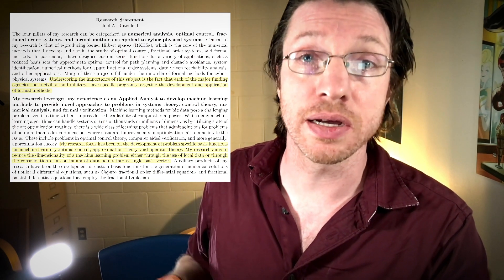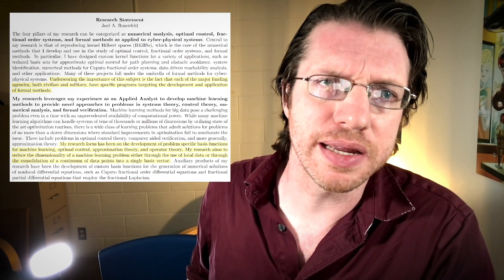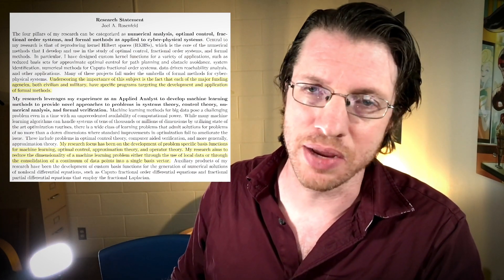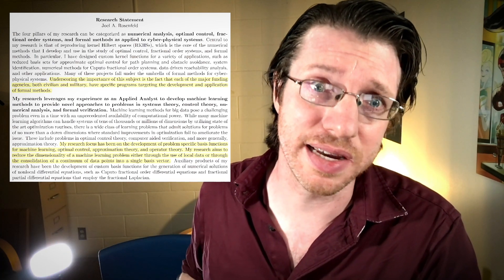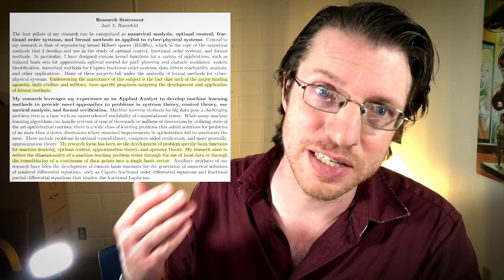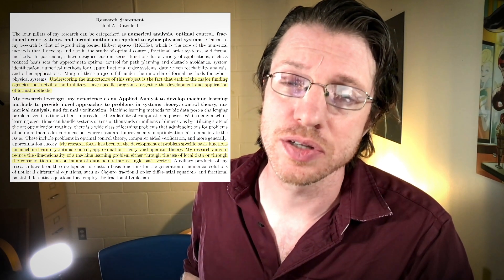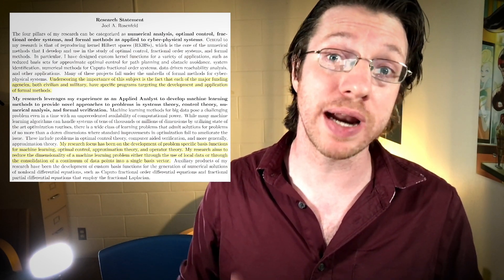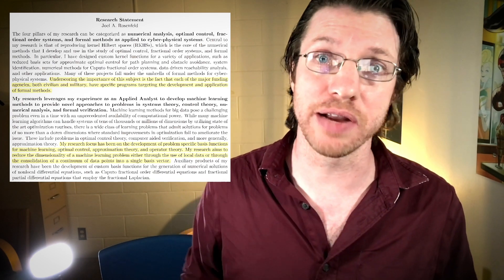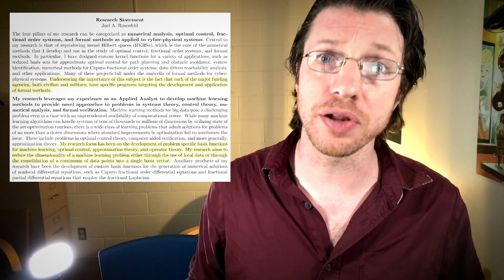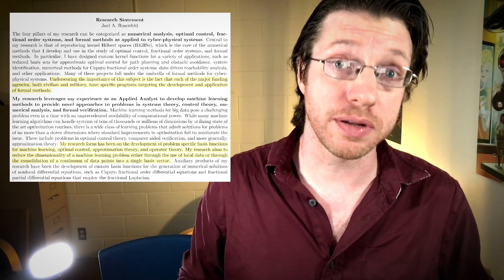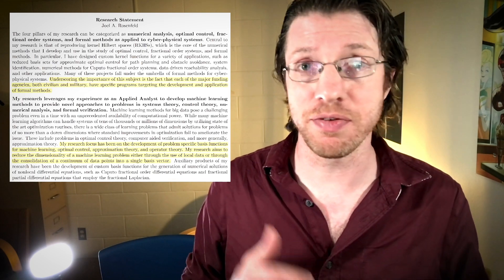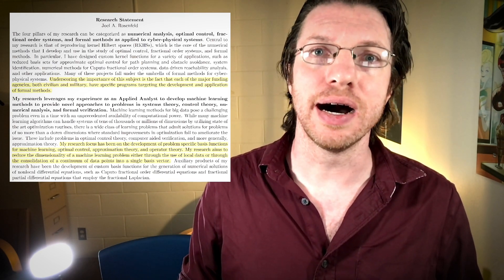In the highlighted bit here I said, underscoring the importance of this subject is the fact that each of the major funding agencies - AFOSR, ARO, DOD in general, NSF - each of them have specific programs targeting development and applications of formal methods. I'm trying to tell them there are places I can send this information to. Now that I've been a professor for a while and have funding, if I was rewriting this statement in that highlighted spot I would say exactly where I've gotten money from. I've gotten about $750,000 from AFOSR and about another $300,000 from NSF. Altogether I'm a co-PI or PI on $1.7 million of federal grant funding split between me and two other colleagues.